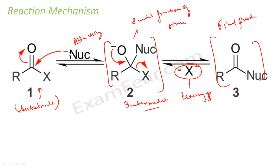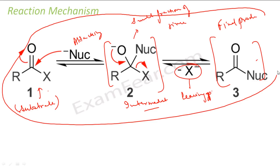So here we have the substrate — the main compound — then we have the attacking reagent, which can be a nucleophile or electrophile. We will study more on this. Then what you get is the intermediate, for some fraction of seconds, and then you get the final product. Sometimes you also get a byproduct.